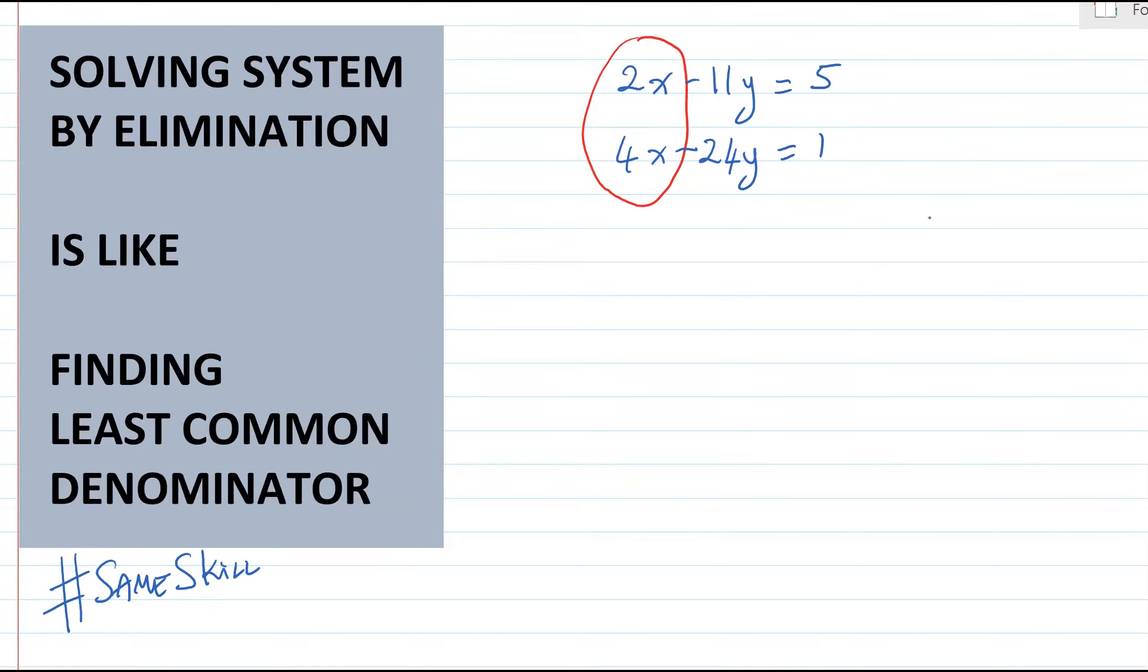It's pretty obvious that we want them both to be 4x, one positive and the other negative. So we multiply the first equation by negative 2.